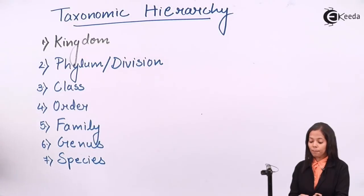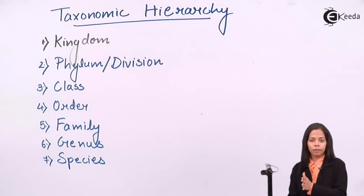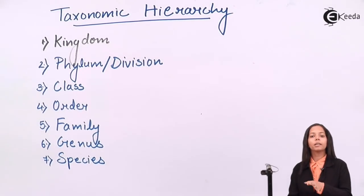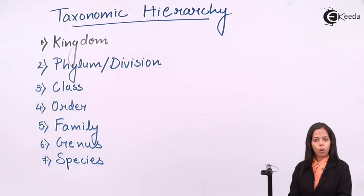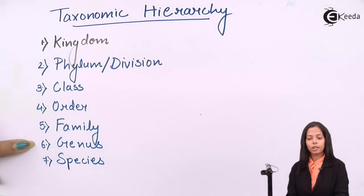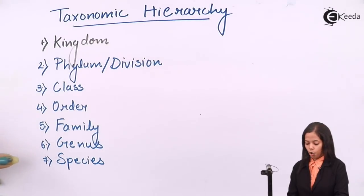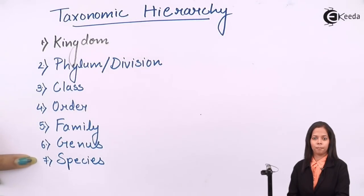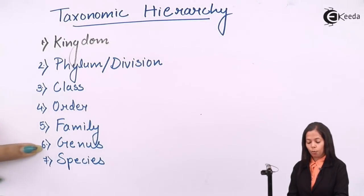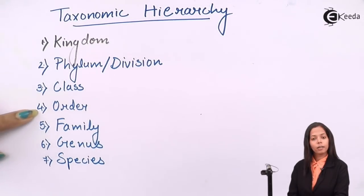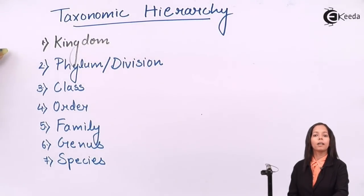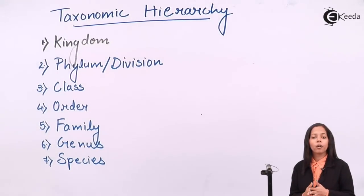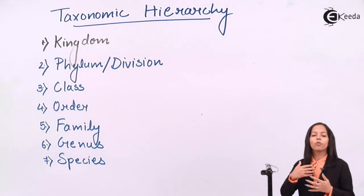We need to understand the meaning of each category. You have two options: memorize all categories individually, or memorize this sequence and the first six definitions become easy. Genus is defined as a group of closely related species. Family is defined as a group of closely related genera. Order is defined as a group of closely related families, and so on. Each category is defined on the basis of closeness shown by the lower category to form the upper category.